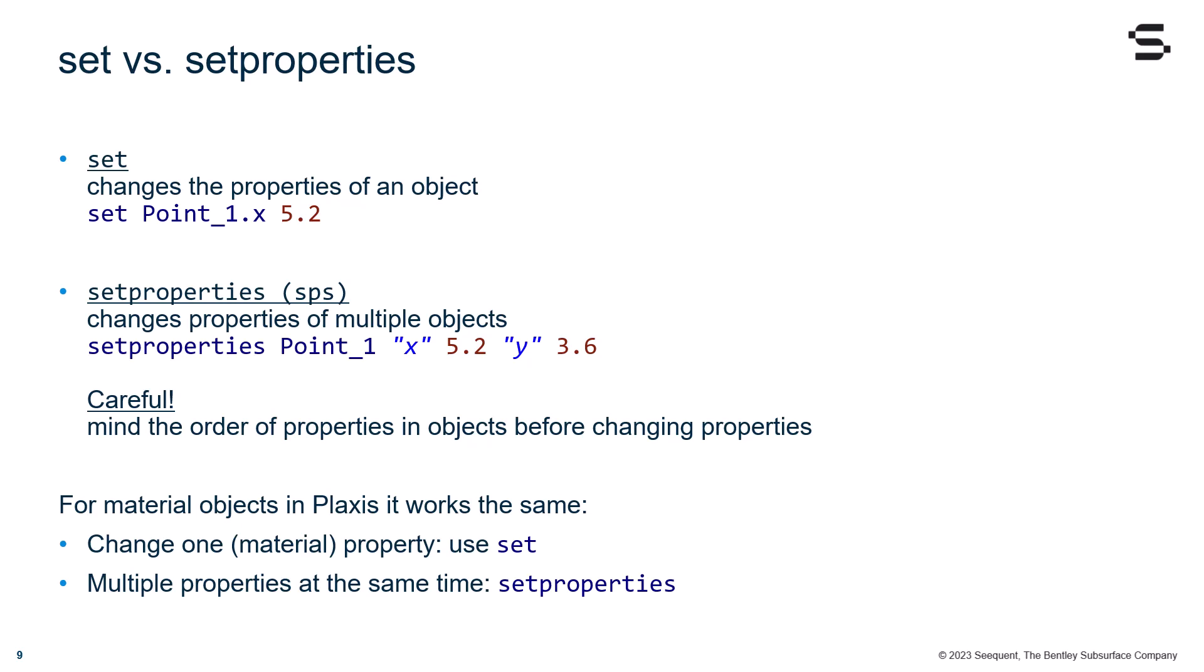For material objects in PLAXIS, it works the same. To change one material property, we use the set command, and for multiple properties at the same time, we can use the setproperties command.